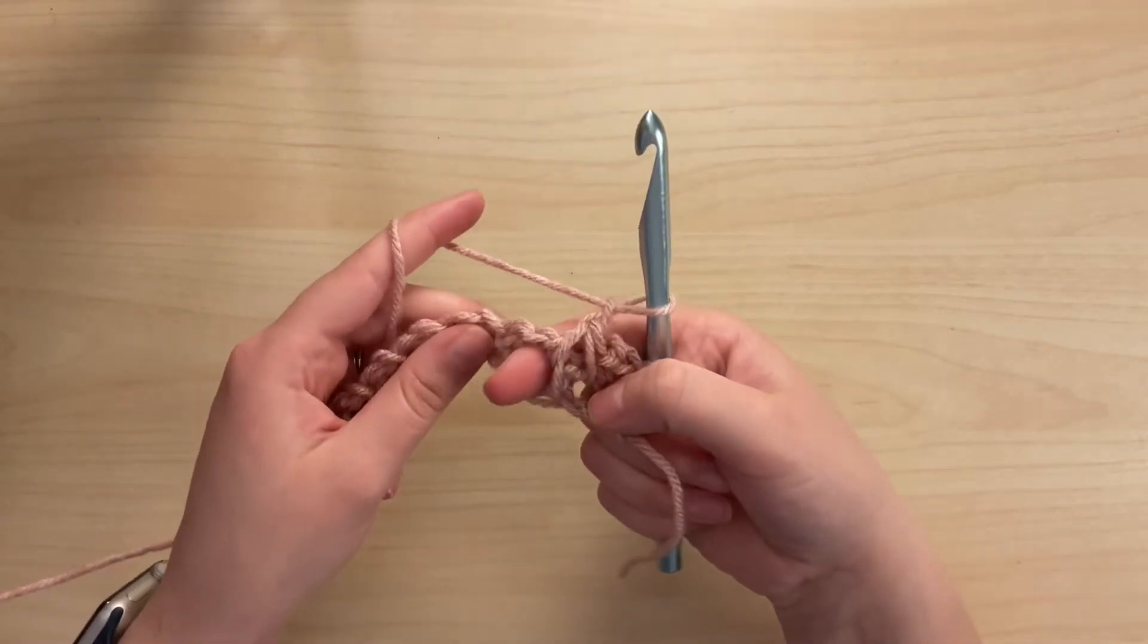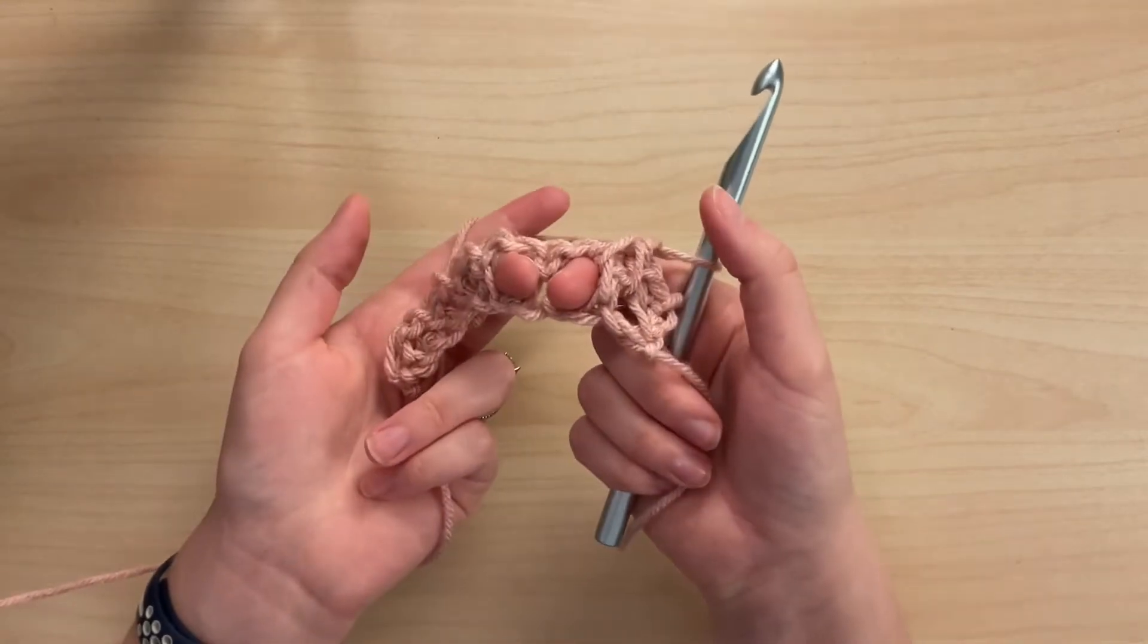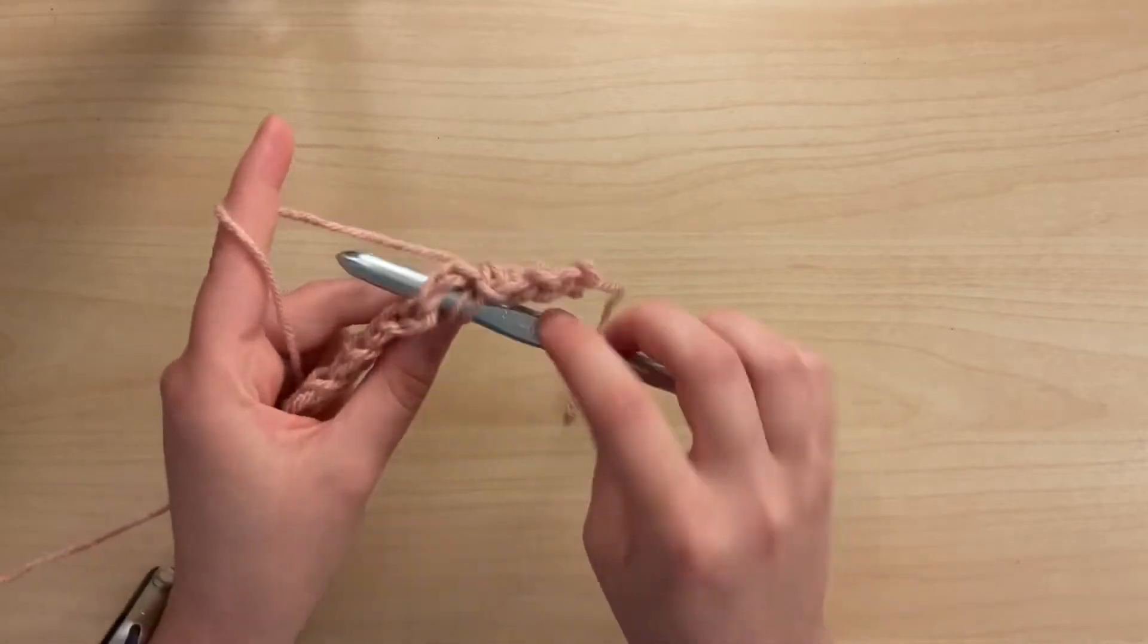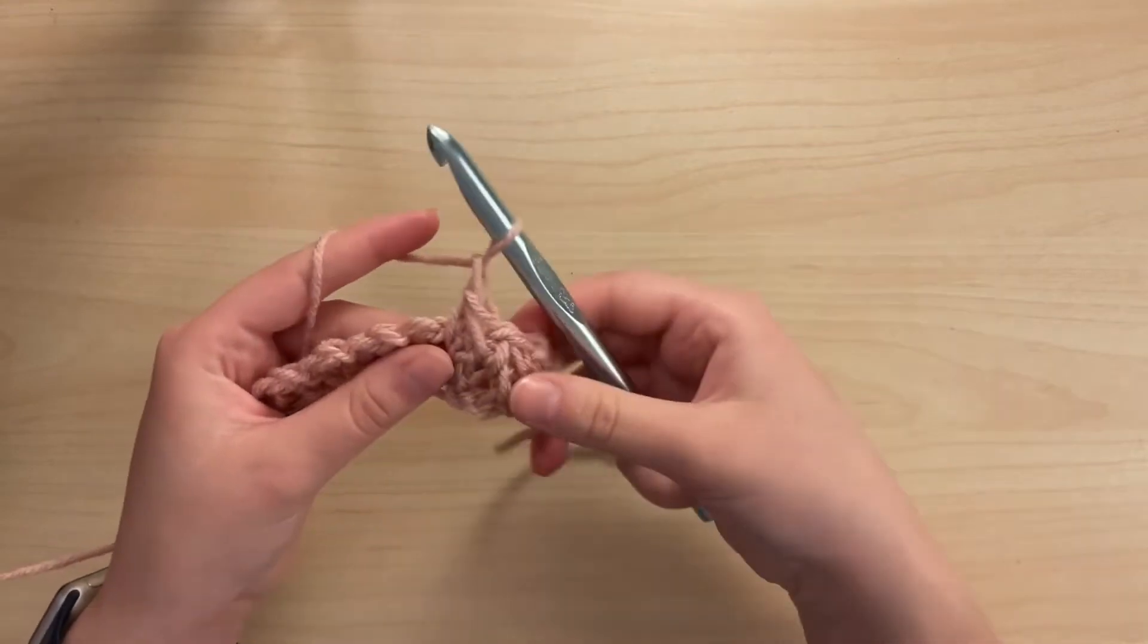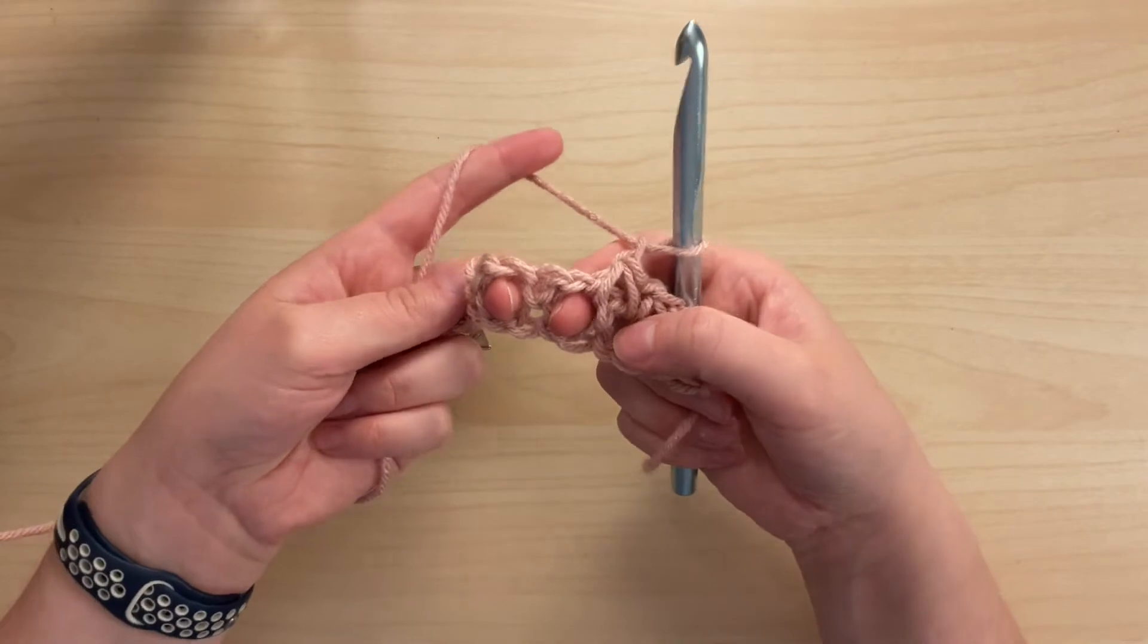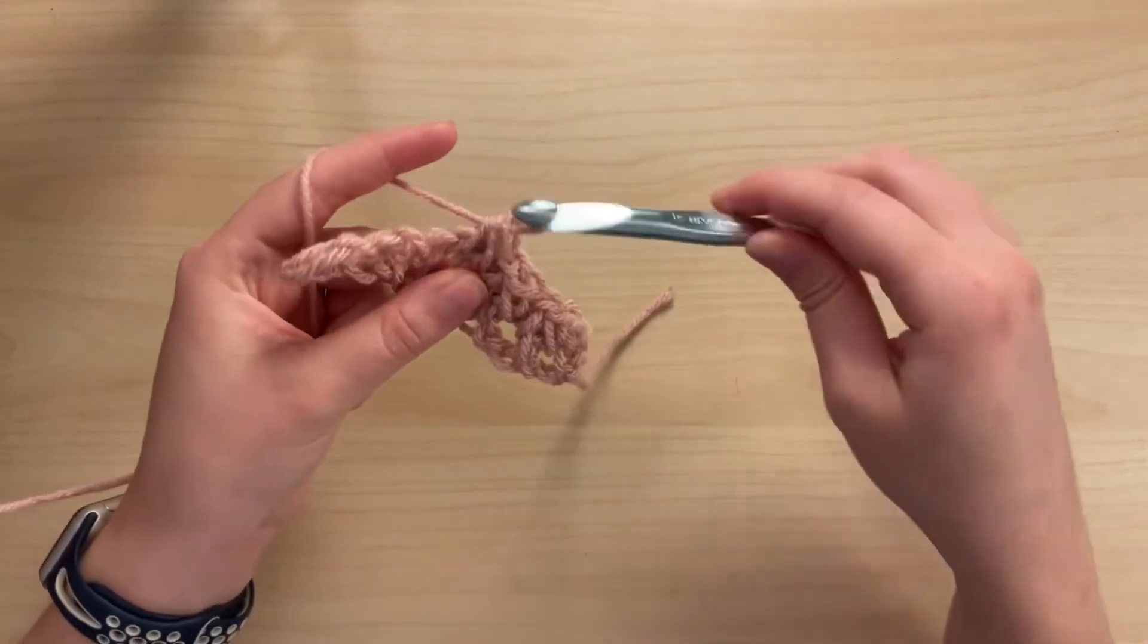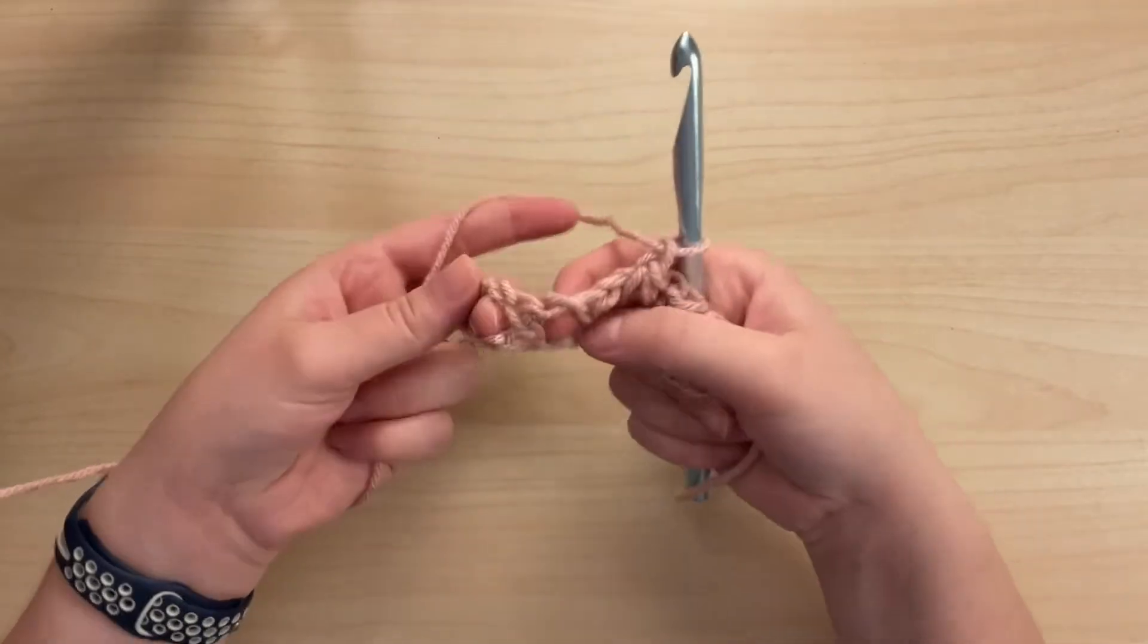Using the same chain space as before and the very next, so these two, we'll place another single crochet two together. So insert your hook and pull up, find the next space, insert your hook and pull up. Then we'll pull through all three loops and chain one. And again, the same chain space and the next, we'll place another single crochet two together. So insert and pull up, insert and pull up, and then pull through all three loops and we'll chain one. And the same thing until the end of the row.